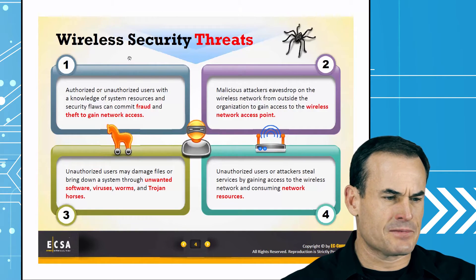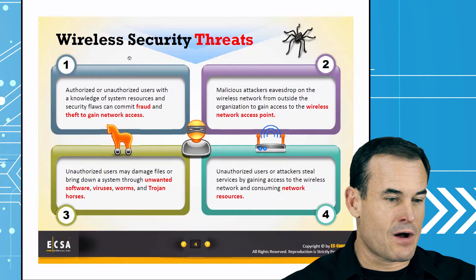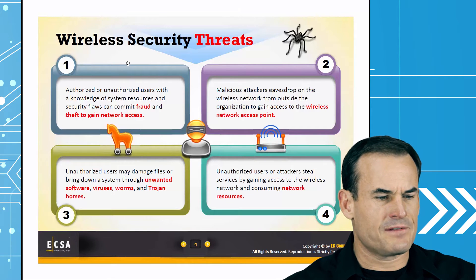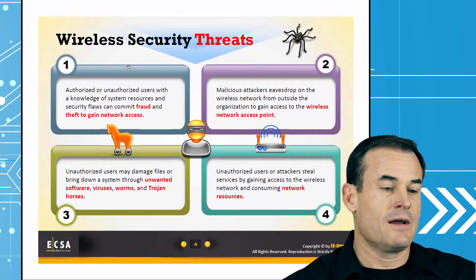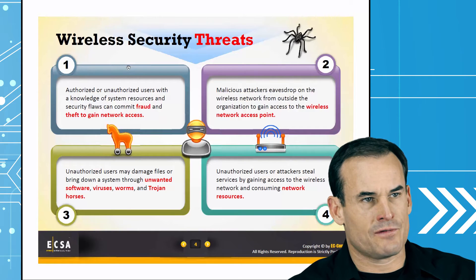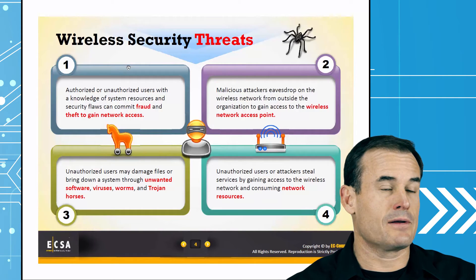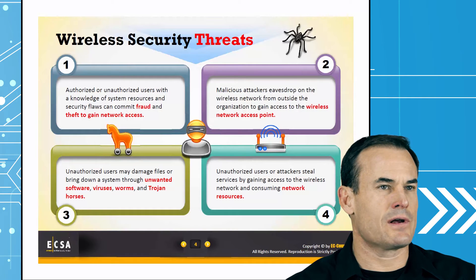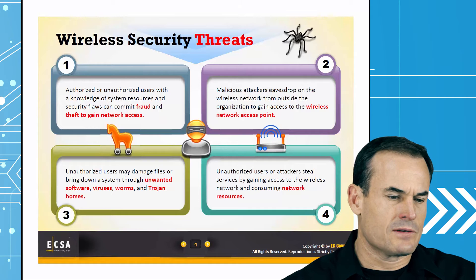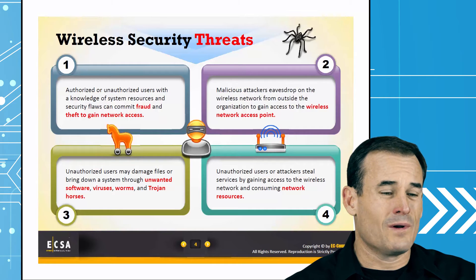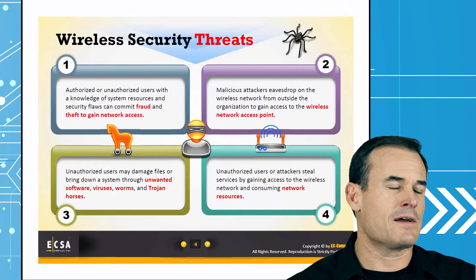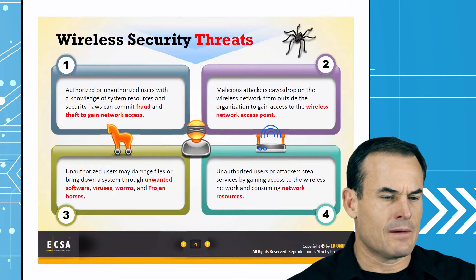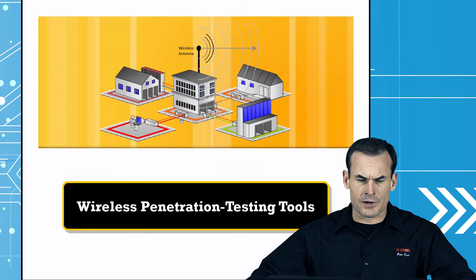Wireless security threats: unauthorized or authorized users with knowledge of system resources and security flaws can commit fraud and theft to gain network access. Two main categories to consider on wireless: the actual data traversing the airwaves and interacting with other devices on the network — am I gaining access and intruding on the network, or am I just eavesdropping or intercepting? Once on the network, you have all the other types of sniffing, packet capturing, and impersonation attacks available as in a wired network.